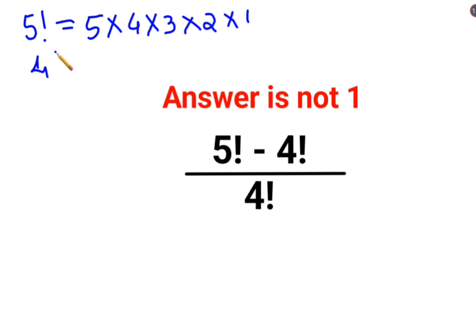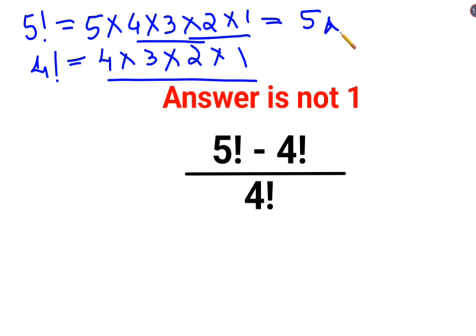Similarly, 4 factorial will be 4 into 3 into 2 into 1. Now if you look closely, this and this is absolutely the same. So I can write this 5 factorial as 5 multiplied by 4 factorial.